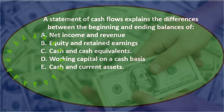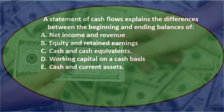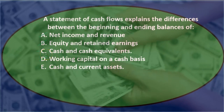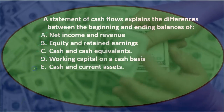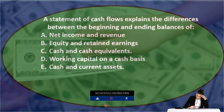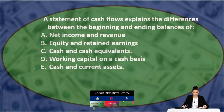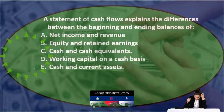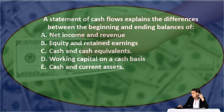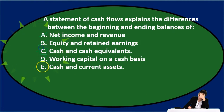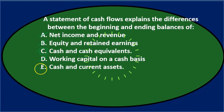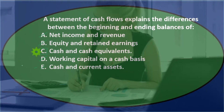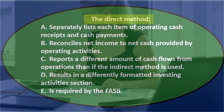Net income and revenue are income statement items, so A is eliminated. Equity and retained earnings relate to the balance sheet or statement of equity, so B is out. Working capital is more of a ratio or analytical calculation, so D is eliminated. That leaves C (cash and cash equivalents) and E (cash and current assets). Since the statement of cash flows focuses specifically on cash and cash equivalents — not all current assets — the final answer is C.